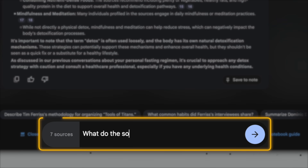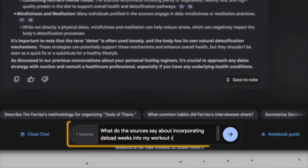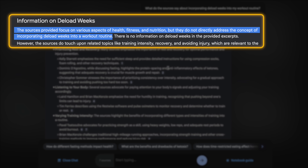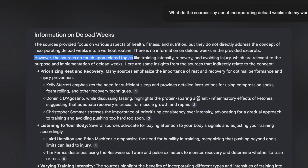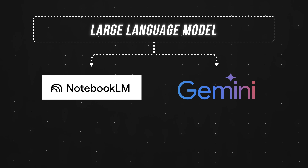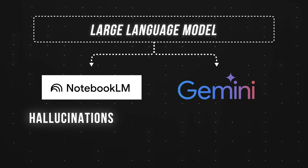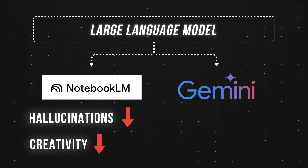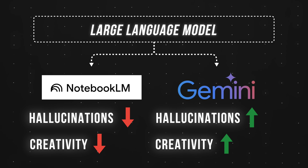I'm going to throw a curveball and prompt this notebook with: what do the sources say about incorporating deload weeks into my workout routine? As expected, NotebookLM says none of the sources mention deload weeks, but the output does reference related topics. This illustrates an important point: even though NotebookLM and Google Gemini might use the same underlying model, NotebookLM is fine-tuned to hallucinate less but is also less creative — whereas Google Gemini, while prone to hallucination, is optimized for speed and creativity.